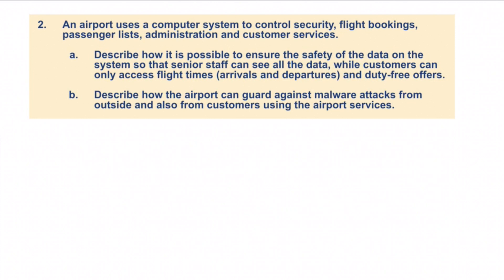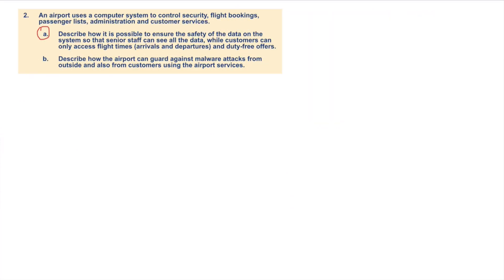Question 2: an airport uses a computer system to control security, flight bookings, passenger lists, administration, and customer services. Describe how it is possible to ensure the safety of the data on the system so that senior staff can see all the data, while customers can only access flight times, arrivals and departures, and duty-free offers.